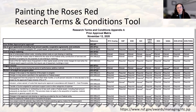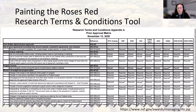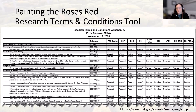There is a research terms and conditions tool for participating agencies that is housed on the NSF site. At the bottom of the slide is the link out to that. This is the research terms and conditions prior approval matrix in Appendix A.